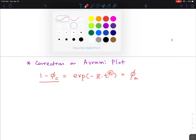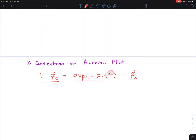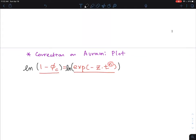What you can do is look at both sides and take the natural log. I was looking at the log but you need a log of a log, and that's a little complication. If you do that, then you will have natural log of (1-φc) equal to minus z times t to the n.